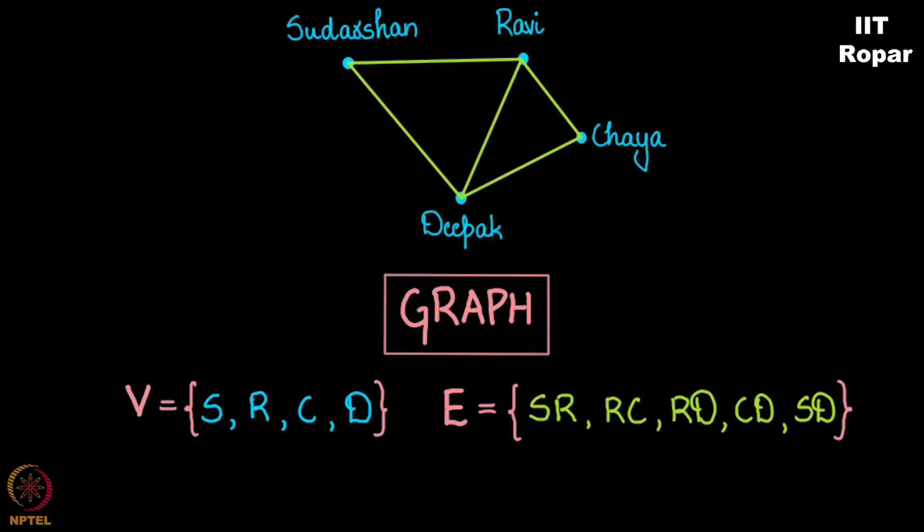Of course, SR and RS are the same because in friendship when S is friends with R, R by default is also friends with S. The first one is called a vertex set, and the second one the edge set.